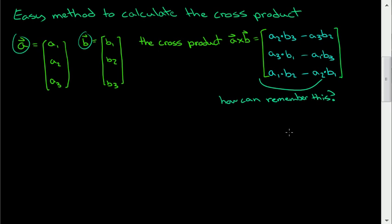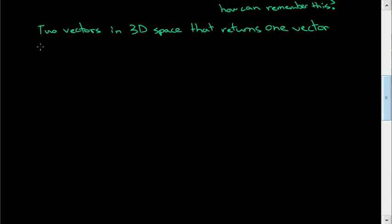Now, the first part of this is to define the cross product. The cross product is taking two vectors, and the cross product is only defined for two vectors in 3D space that returns one vector, one vector that's perpendicular to the two input vectors. So the key thing here is to just know this. If you just know that two vectors in 3D space returns one vector, then you only need to remember 2, 3, and 1.